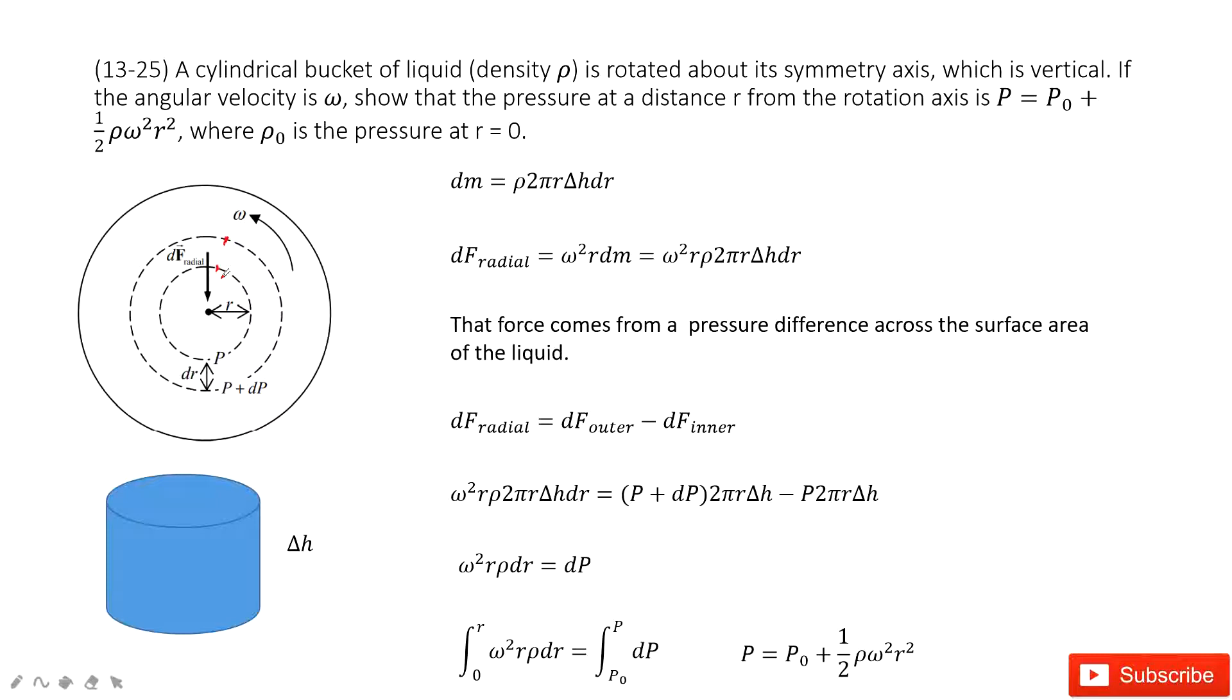So that means if we want to find this pressure, we need to find the force, the centripetal force at an outer layer and also at the inner layer. The difference between these two layers is the force, and this force divided by the cross-sectional area is our P, pressure. So how can we do that?